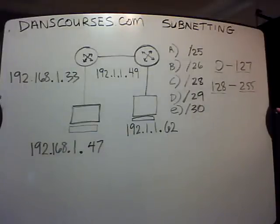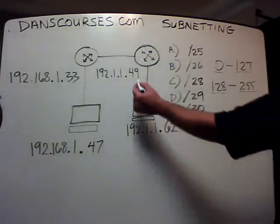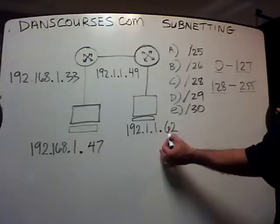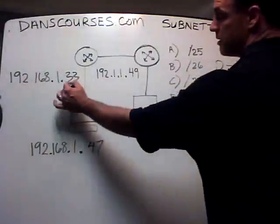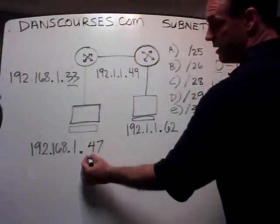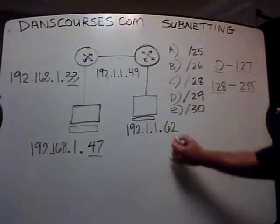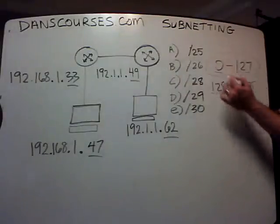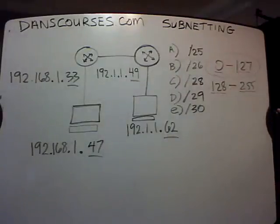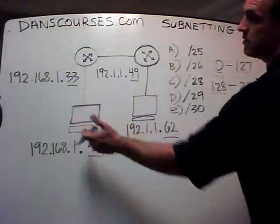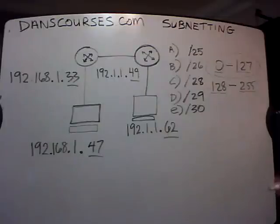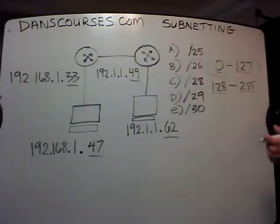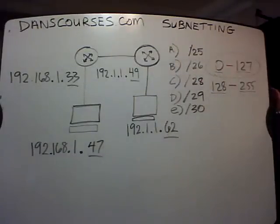That would not work with this addressing scheme. Why? Because 49 and 62 and 33 and 47 are all in one network, and we need two networks for this diagram to function. So slash 25 does not work.